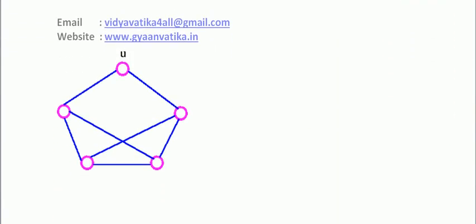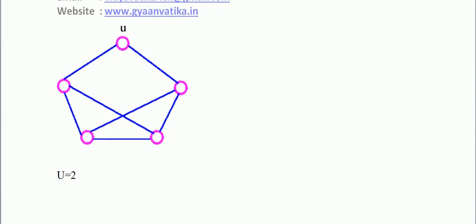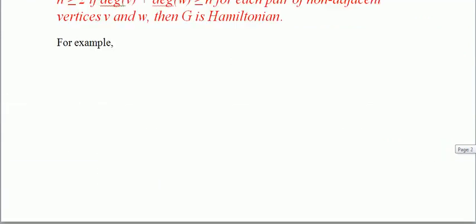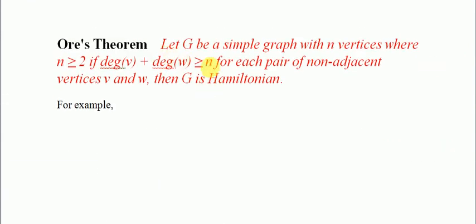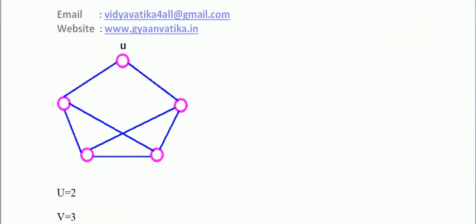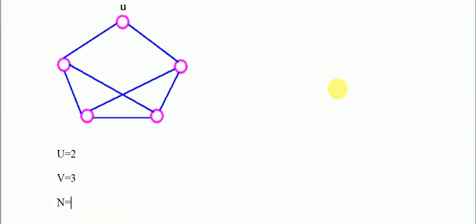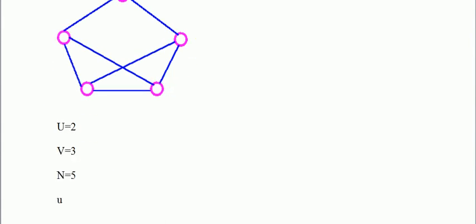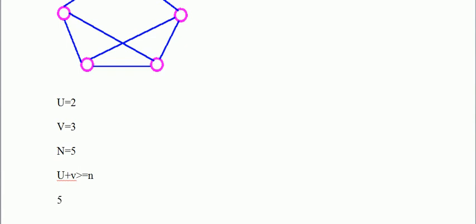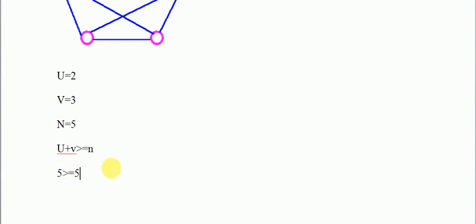We will check for one pair of vertices. Taking vertex U, its degree is 2. Taking vertex V, its degree is 3 (edges 1, 2, and 3). Ore's theorem states that if deg(U) + deg(V) ≥ N, where N is the number of vertices — here N = 1, 2, 3, 4, 5, so N = 5 — then the graph is Hamiltonian. Since 2 + 3 = 5 ≥ 5, this is true and the graph is Hamiltonian.